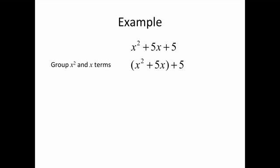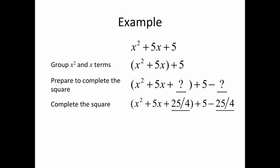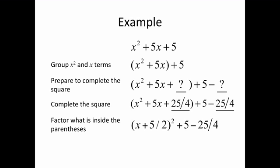I'd like you to do one more. This one we're going to do where the coefficient of x is not even — in other words, it doesn't divide evenly by 2. But we can still complete the square. We're going to group the terms as before, then prepare to complete the square by leaving those empty spaces. Now we take half of 5, which is 2 and a half — that's 5 halves — and we square that to get 25 fourths. We're going to add 25 fourths inside and subtract 25 fourths outside. Then we factor what's inside the parentheses to x plus 5 halves squared, plus 5 minus 25 fourths. Then we simplify what's outside the parentheses to get x plus 5 halves squared minus 5 fourths.